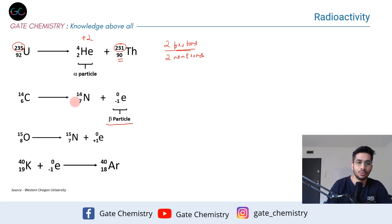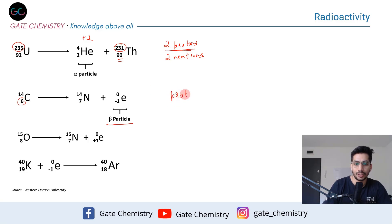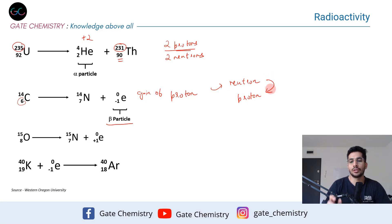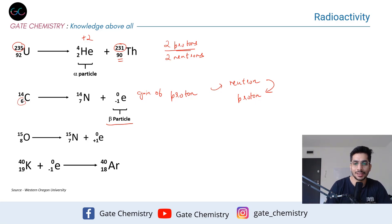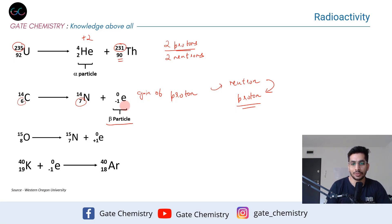Next is beta emission or beta decay. In beta decay, there is no change in the mass number — the atomic number changes from six to seven, meaning there is a gain of proton. This happens because one of the neutrons gets converted into a proton. Since a neutron is converting to a proton, the mass number remains the same, but because the number of protons increases, the atomic number increases by plus one.